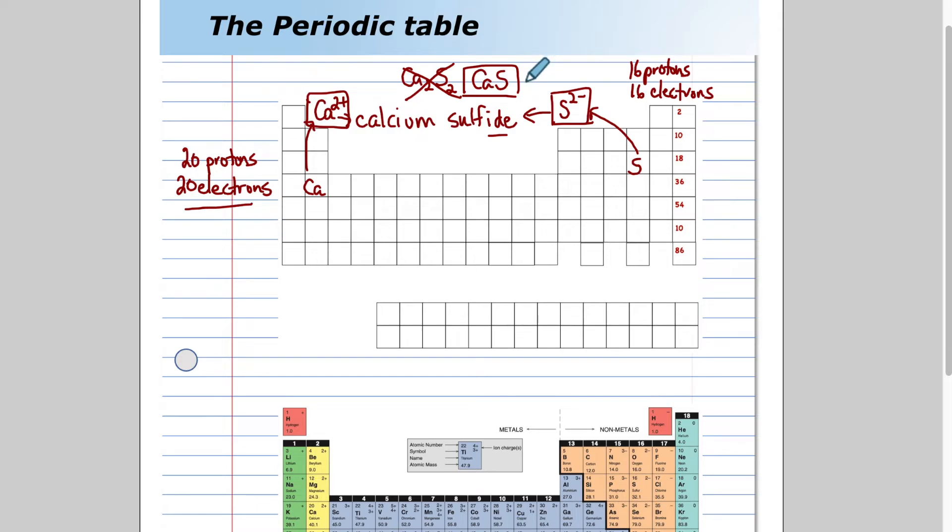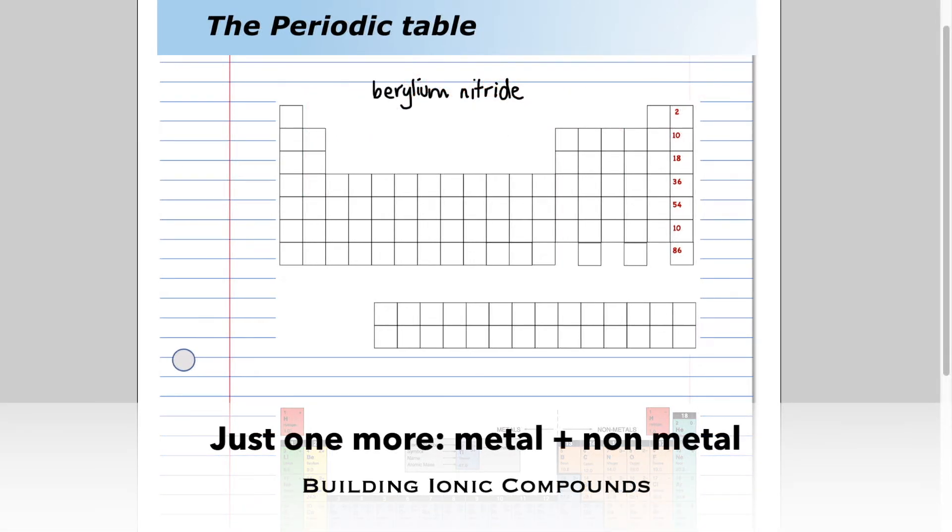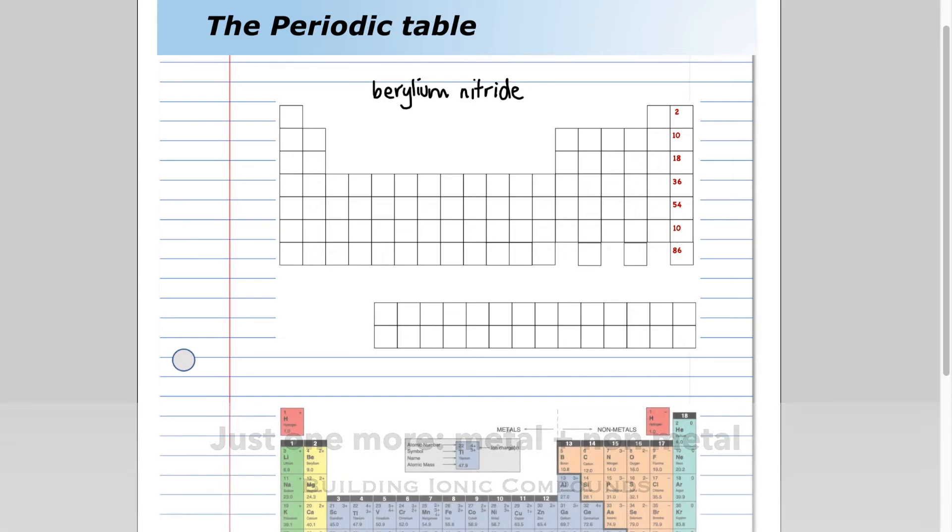Ionic compounds are made from metals and non-metals and they involve positive and negative charges. I hope that helped. I know I said that would be my last example, but can you think of a tricky example? Let's try it. Okay, here it is. Here's beryllium nitride.